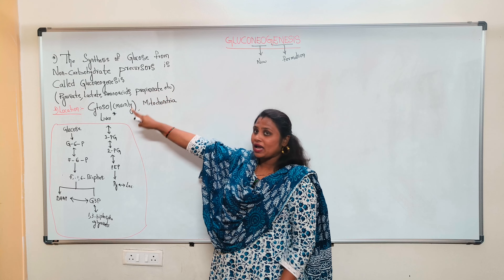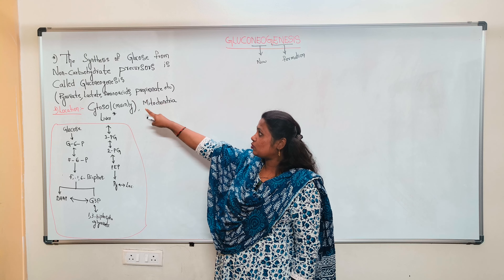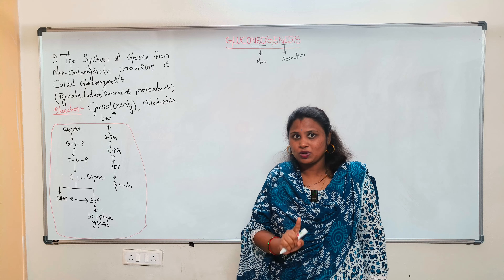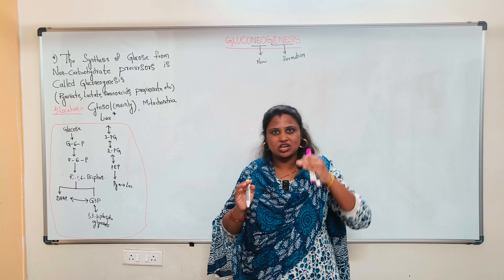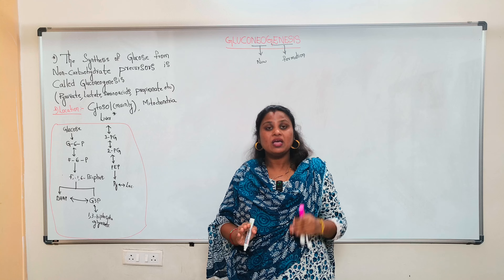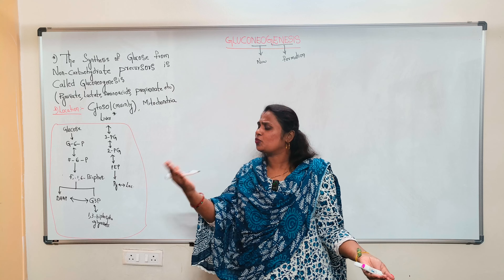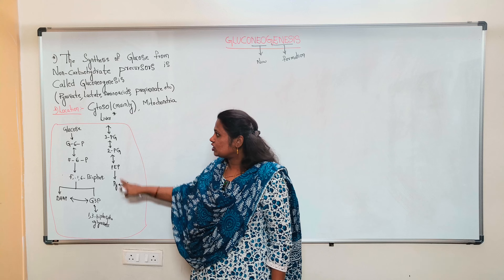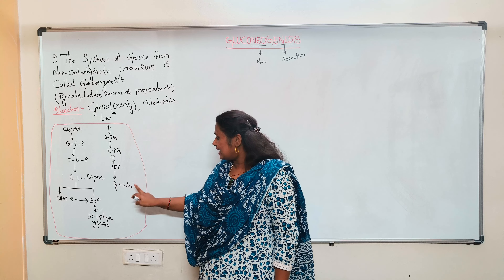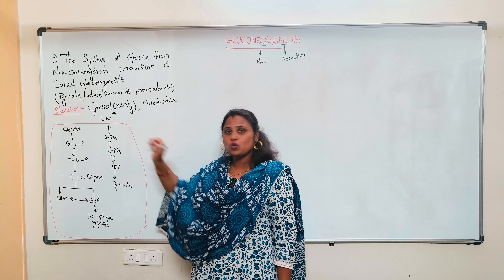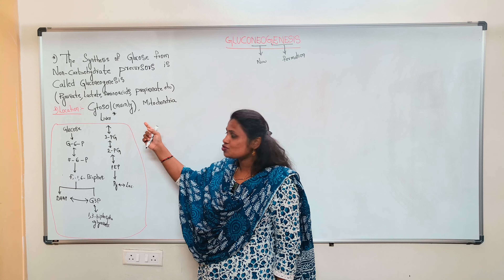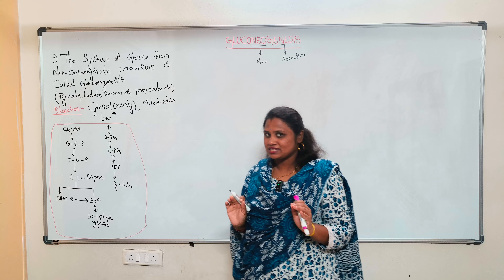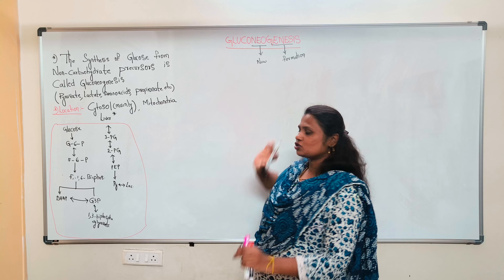The non-carbohydrate precursors include pyruvate, lactate, amino acids, propionate, etc. In the glycolysis pathway, glucose is split into end products — aerobic conditions give pyruvate, anaerobic give lactate. So in the reverse process, when we use pyruvate or lactate, we get glucose. When we use amino acids or propionate, we also get glucose — that is Gluconeogenesis.